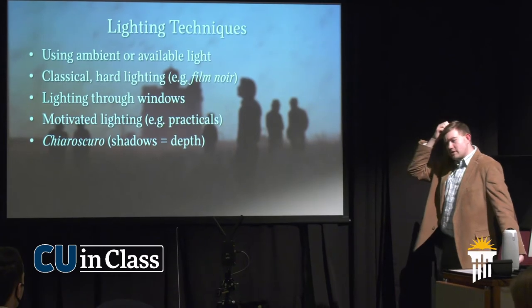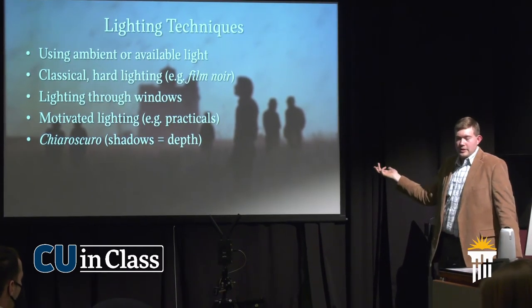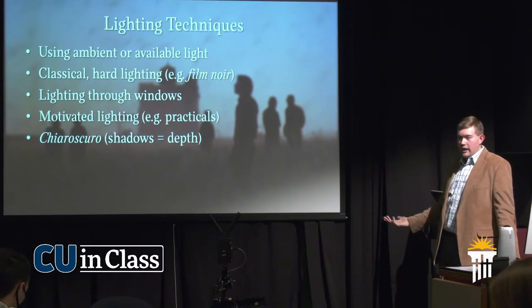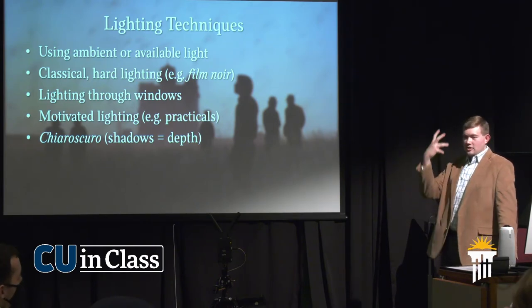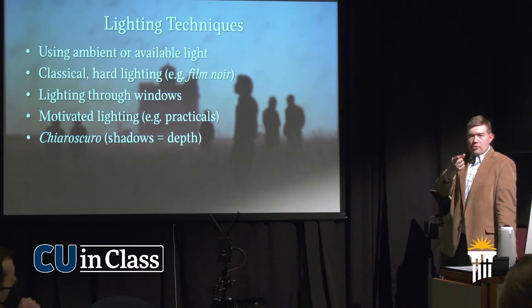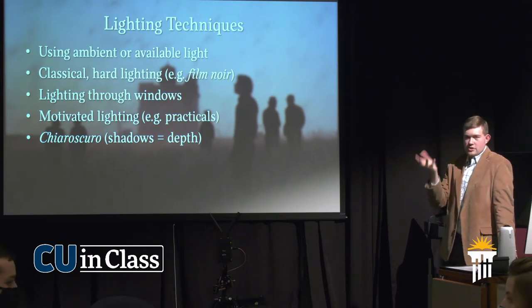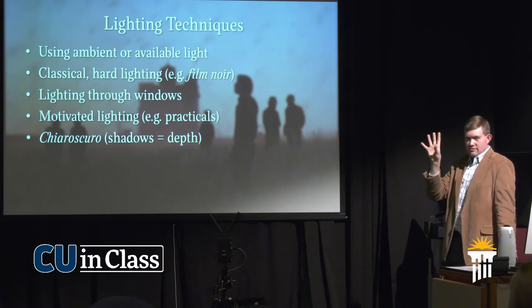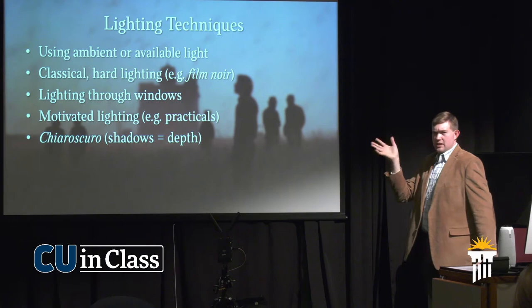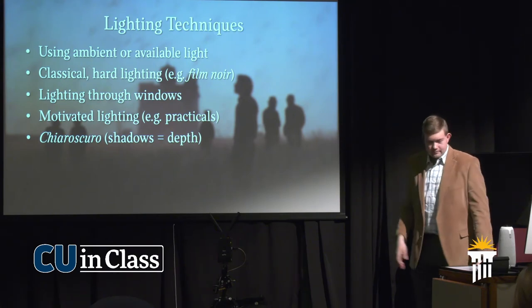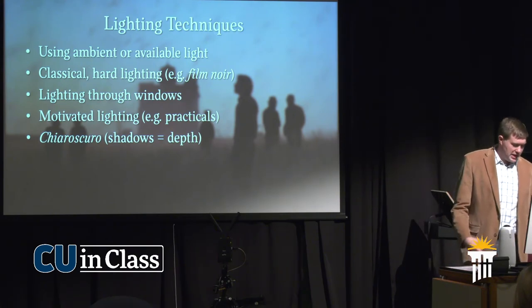Some other terms: chiaroscuro — a term for heavily using shadows. You could argue The Godfather does this. Apocalypse Now, another movie by the same people, does it more. Using shadows to create depth and just having like a sliver of somebody's face — like when we first see Harry Lime in The Third Man, it's just his face, and it adds to the mystery of who he is. It's playing with shadow to create depth.